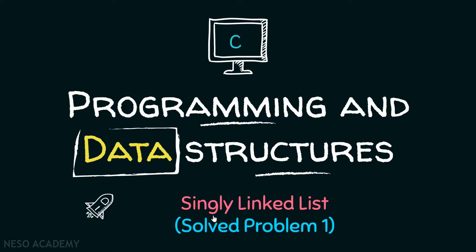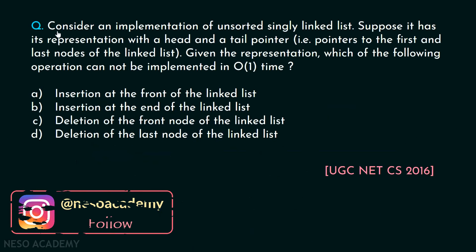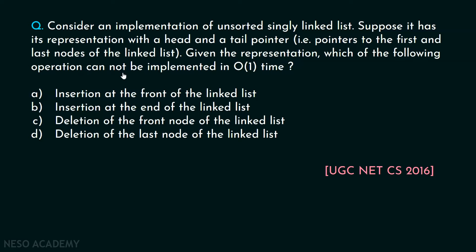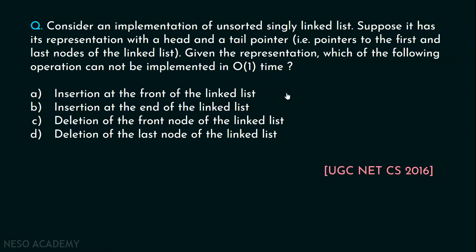In this presentation, we will consider and solve problem one on singly linked list. Consider an implementation of an unsorted singly linked list. Suppose it has its representation with a head and a tail pointer — that is, pointers to the first and last nodes of the linked list. Given this representation, which of the following operations cannot be implemented in constant time, that is, O(1) time? This question has been asked in UGC NET CS 2016.